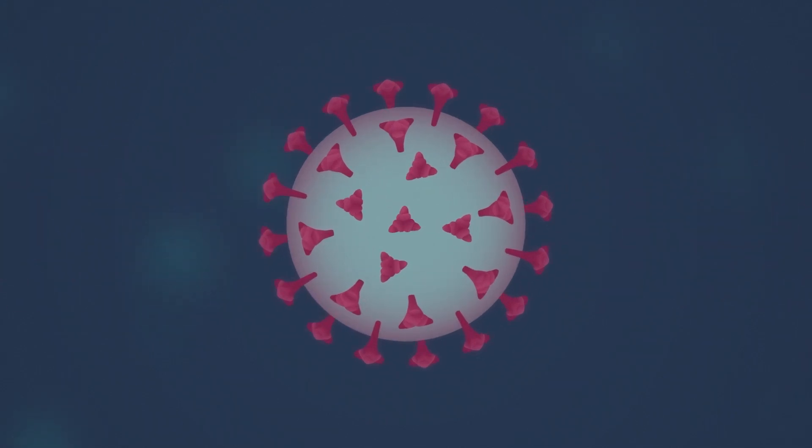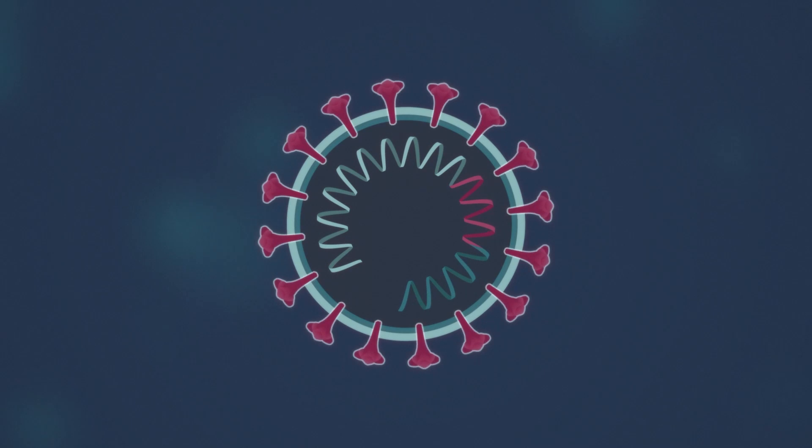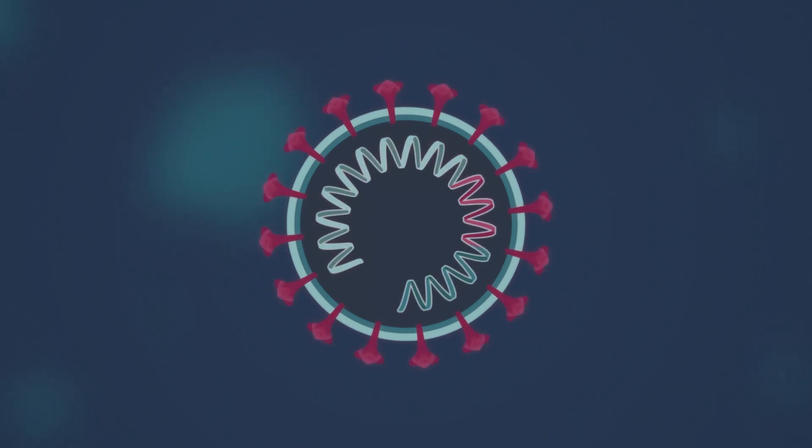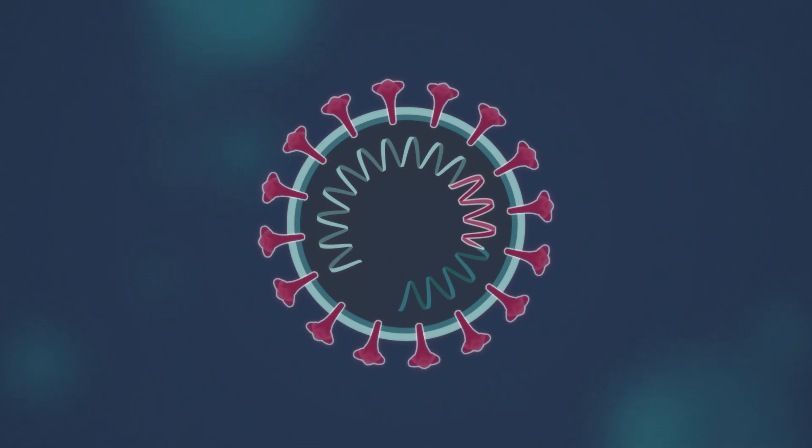All coronaviruses are covered in spike proteins, and it is these that are used to enter human cells. Inside the virus is the RNA, which is like a recipe for the creation of new viruses. A distinct portion of this RNA is responsible for reproducing the spike proteins.